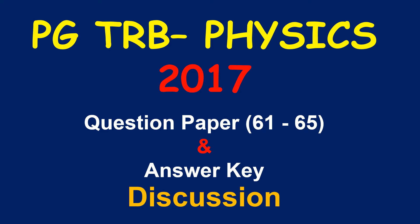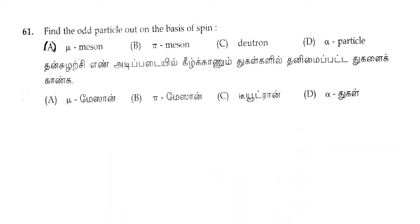Welcome to SS Academy channel for physics. In the 2017 year corner question paper, questions number 61 to 65 are discussed. Question 61: find the odd particle out on the basis of spin.